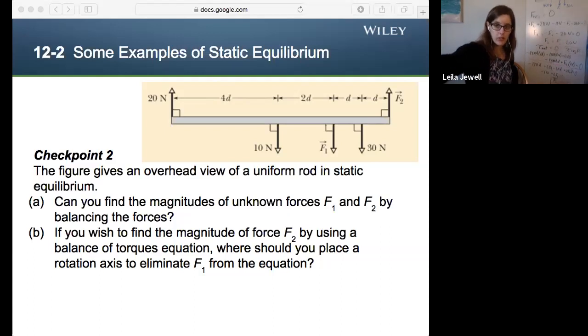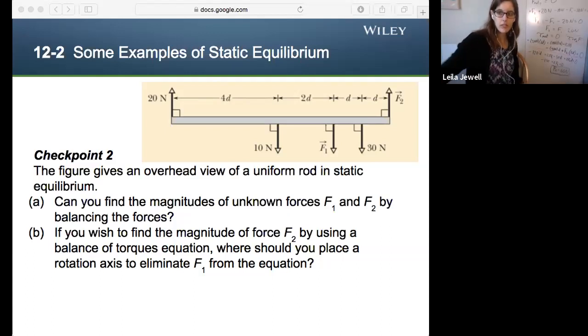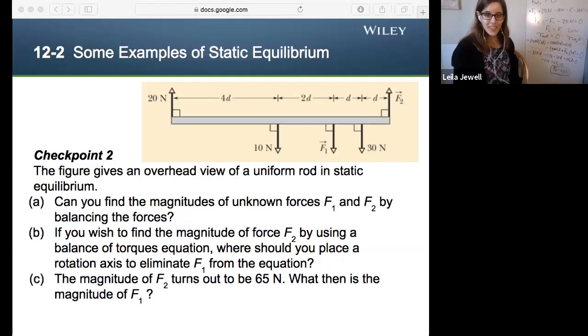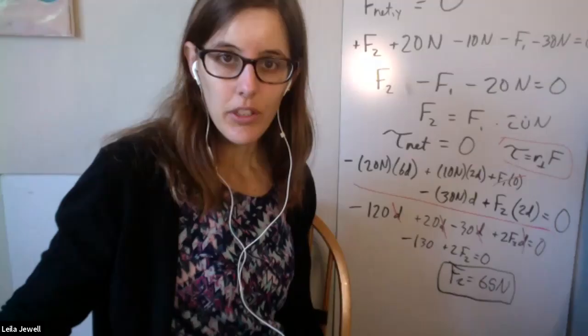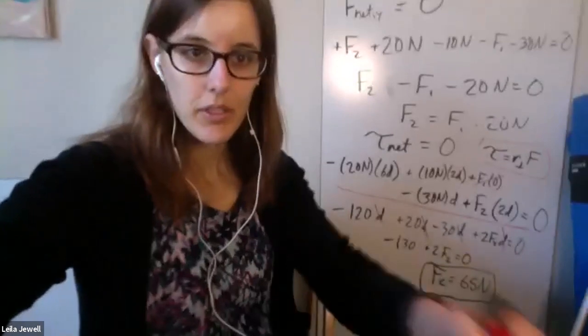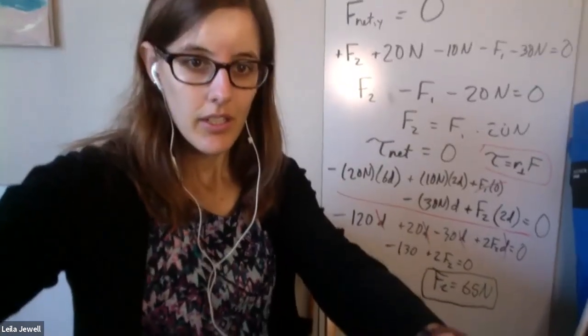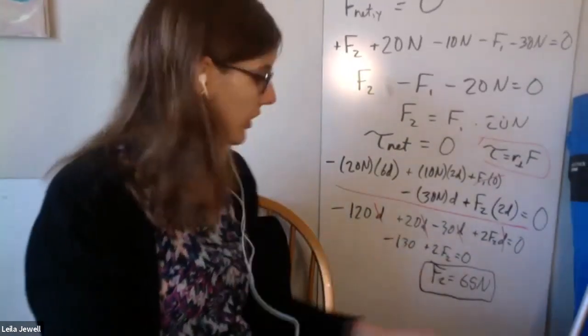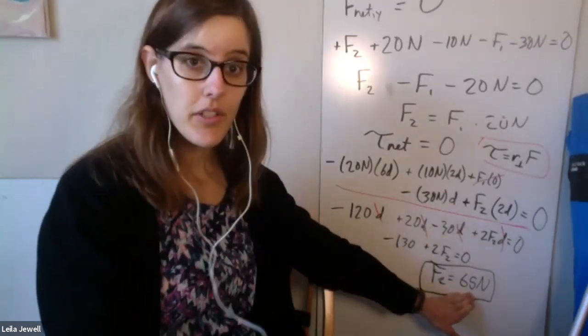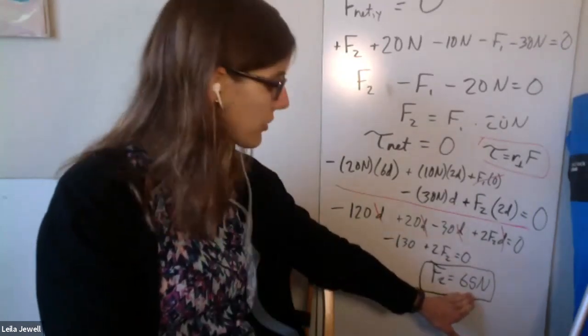And so what we get is that f2 is equal to 65 newtons. Sorry, that's a little low there. There we go. So part C, magnitude of f2 turns out to be 65 newtons. What then is the magnitude of f1? Well, I realized I should stop sharing the whiteboard's a little bigger. Here we go. Sorry about that. So we solved for f2 is equal to 65 newtons here. Cool. That's great.